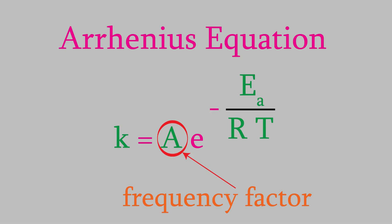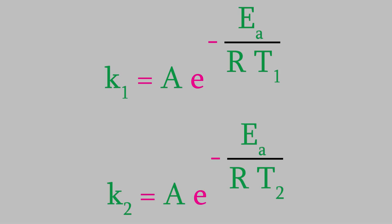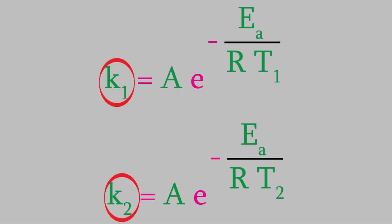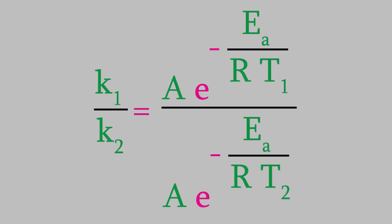Here's how. Suppose we perform a reaction twice, at two different temperatures. At temperature 1, we have this equation, and at temperature 2, we have this one. The activation energy is the same no matter what the temperature is, so EA is the same both times, and so is A. But we do have two different rate constants. What we want to do is come up with an equation without A in it. We can do that by dividing these two equations. On the left side, we get k1 divided by k2. On the right side, we get this. First of all, notice that the two A's will cancel out. That was our main goal, so we've already achieved that. But let's simplify what's on the right side of this equation.